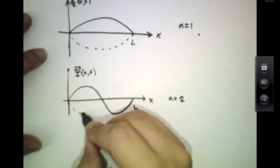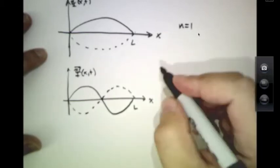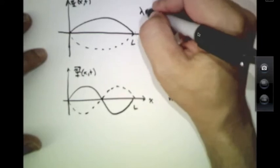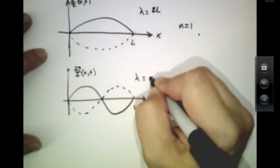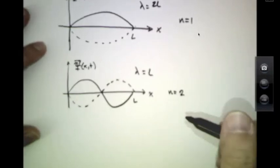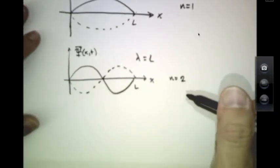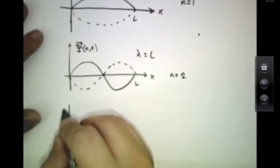At a half a period later, the dashed line is a half a period later. This is the familiar case of lambda is 2L, this is the familiar case of lambda equals L, and the other case for n equals 3.